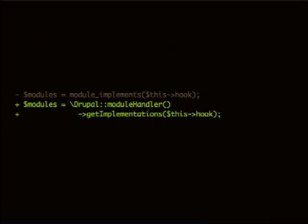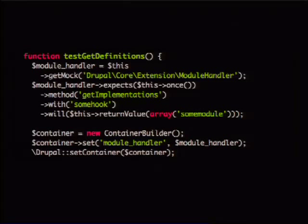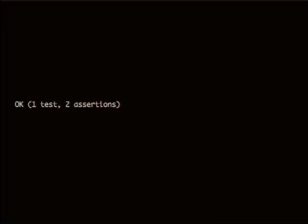If we make a small change — swap out module_implements for Drupal::moduleHandler()->getImplementations() — this is something you see a lot in Drupal, especially in the entity system where there's not a lot of injection. You might wonder if this is actually testable because it is a static method call. It is. Here's how: you create a module handler mock, set an expectation on it, but then you have to create a new container, set the module handler on that container, and set the global container singleton on the Drupal class — so that when Drupal::moduleHandler() gets called, it pulls from your container and not Drupal's. It will fail if you don't do this because there is no container in PHPUnit.